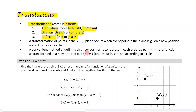A convenient method of defining this new position is to represent each ordered pair x, y of a function as transformed to a new ordered pair x dash, y dash, according to a rule. At the moment you're probably reading this and thinking, what on earth does this mean? But don't fear — by the end of the lesson, once we've gone through all our examples, this will make perfect sense.